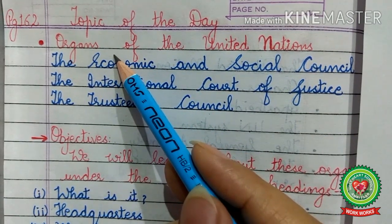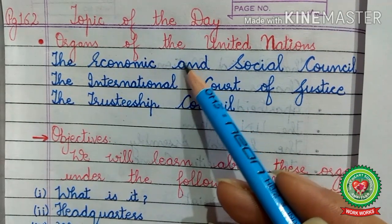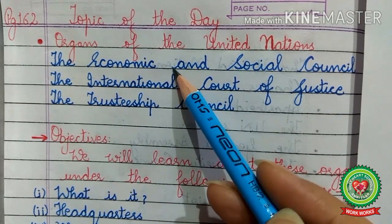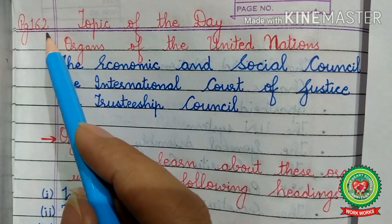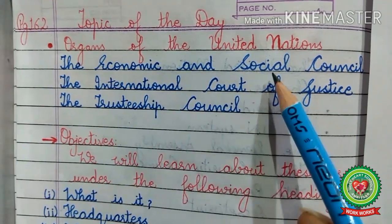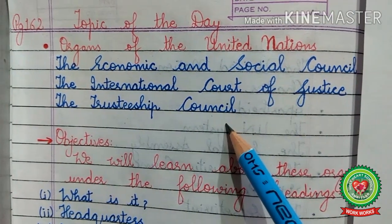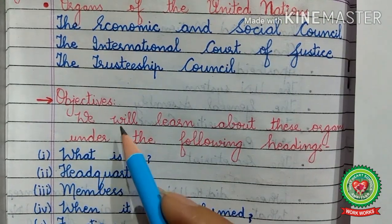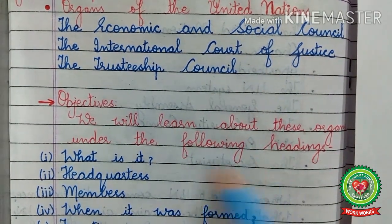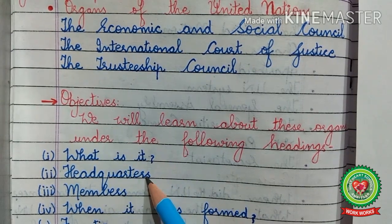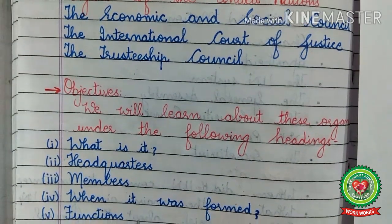Now let us start today's topic — organs of the United Nations. The first three organs were discussed in the earlier video. Today we are going to talk about the next three organs, discussing page 162 of the book: the Economic and Social Council, the International Court of Justice, and the Trusteeship Council. We will learn about these organs under the following headings: what is it, headquarters, members, when it was formed, and functions.